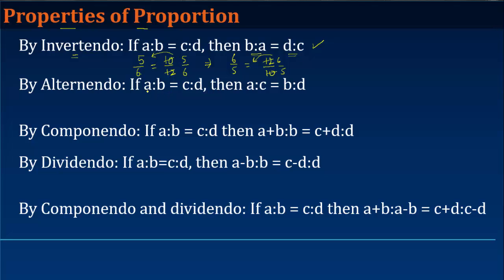Again, if a is to b is equal to c is to d, then by alternando property, a is to c is equal to b is to d. Let us see whether this is also true.